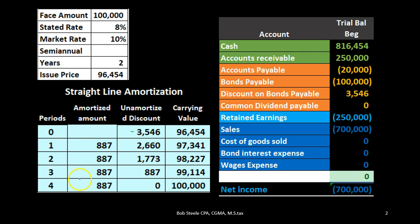With $887 per period, we reduce the unamortized discount each time. Starting at $3,546, minus $887 brings us to $2,660, and the carrying amount becomes $100,000 minus $2,660, or $97,341. Next period: $2,660 minus $887 gives us $1,773, and carrying amount is $98,227. Period three: $1,773 minus $887 gives $887, and the carrying amount is $100,000 minus $887, or $99,114.